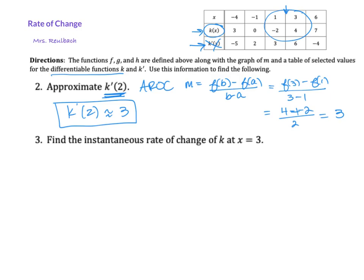Now that's different from the instantaneous rate of change. Remember, the instantaneous rate of change is IROC, right? And that is slope, and that is found by using the derivative. So what we're looking for is, we're looking for k prime at three. And this is the instantaneous rate of change at x equals three.